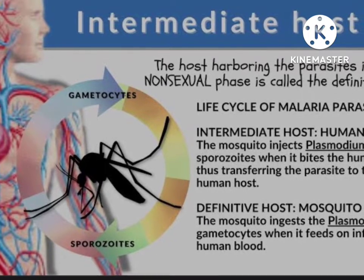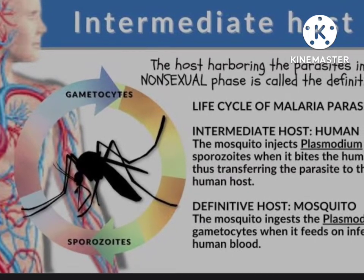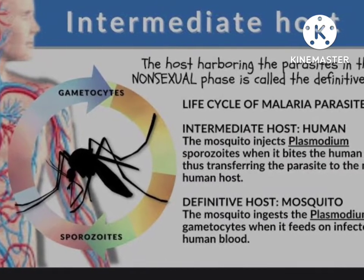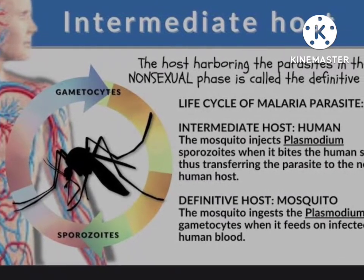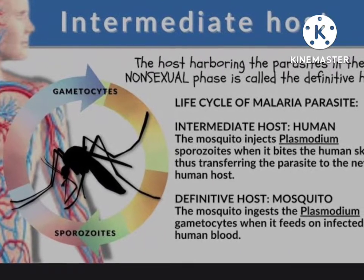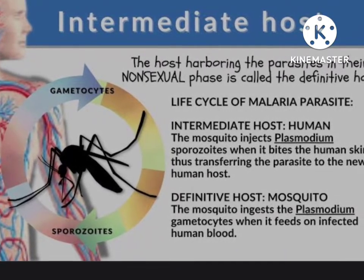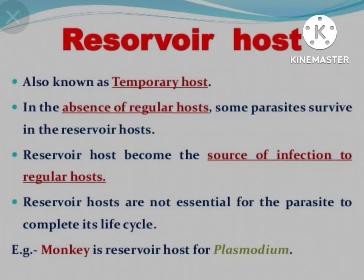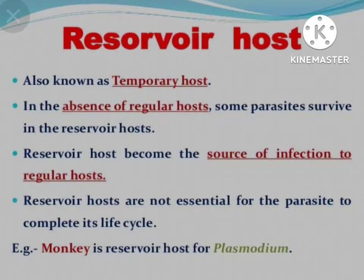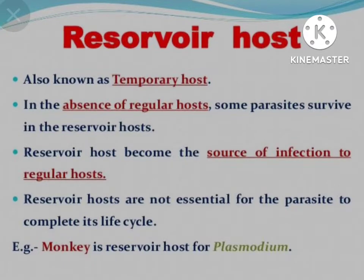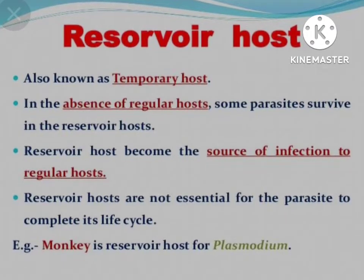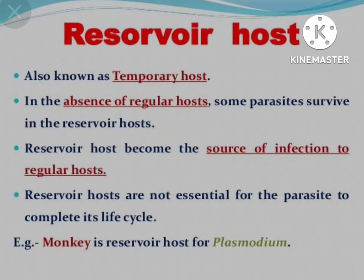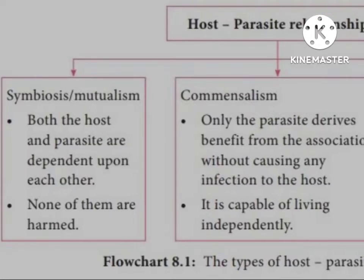The intermediate host is the host that harbors the larval stages of the parasite, or where the parasite replicates asexually. So in the intermediate host, the parasite remains in its larval stage. The reservoir host is the host that harbors the parasite and acts as an important source of infection.